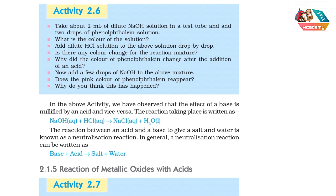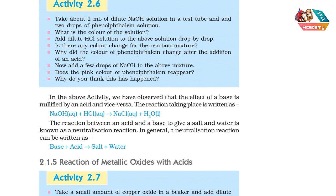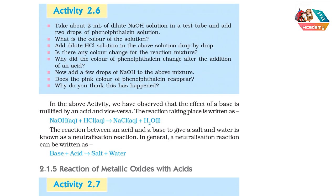First, take about 2 ml of dilute NaOH solution in a test tube and add 2 drops of phenolphthalein solution. We take a test tube, get 2 ml of dilute NaOH solution, then add 2 drops of phenolphthalein solution. Phenolphthalein is an indicator, so we add it into the NaOH solution.